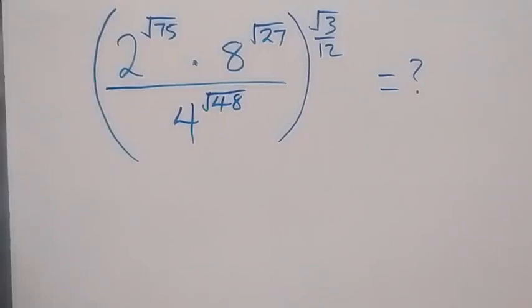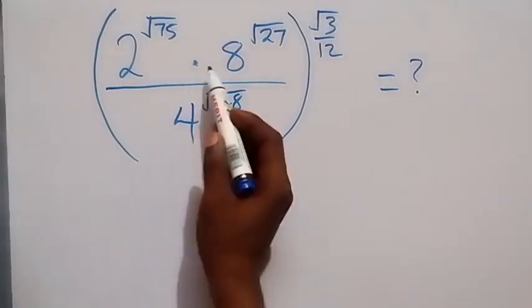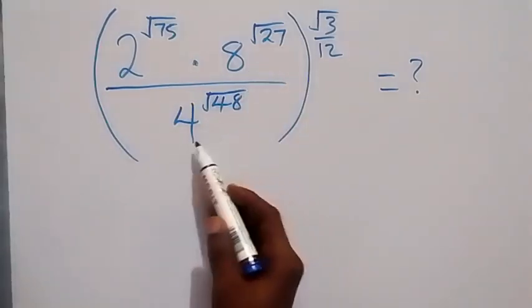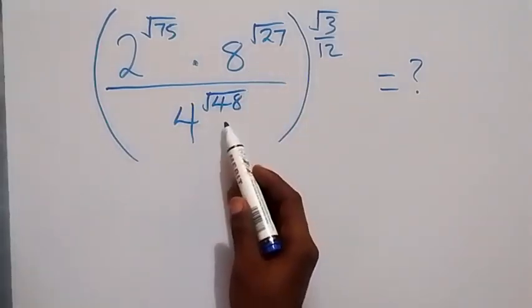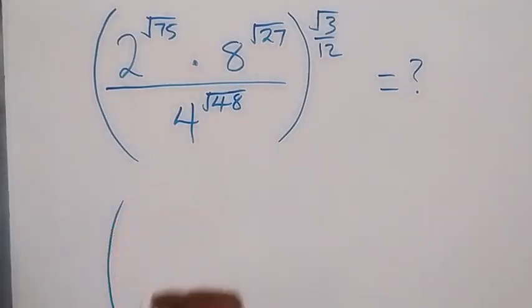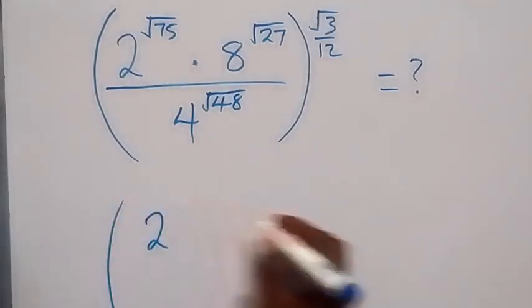Hello, you are welcome. How to solve this nice math problem involving roots. From here we have 2 raised to the power root 75, times 8 raised to power root 27, divided by 4 raised to power root 48, all raised to power root 3 over 12. From here we can rewrite this.